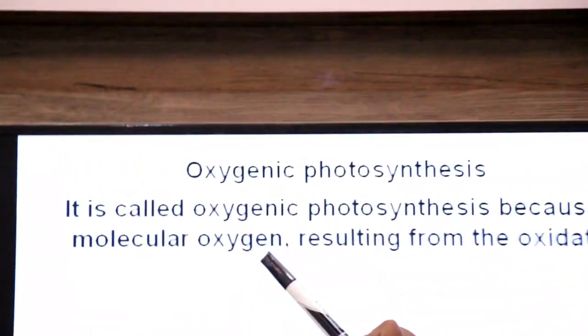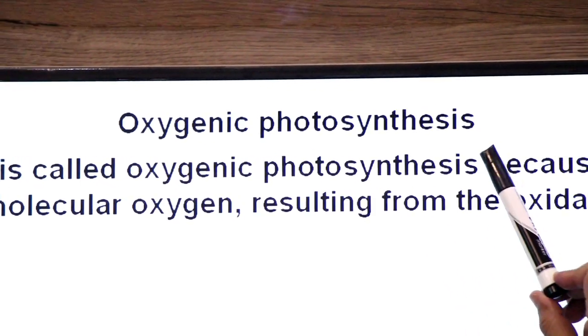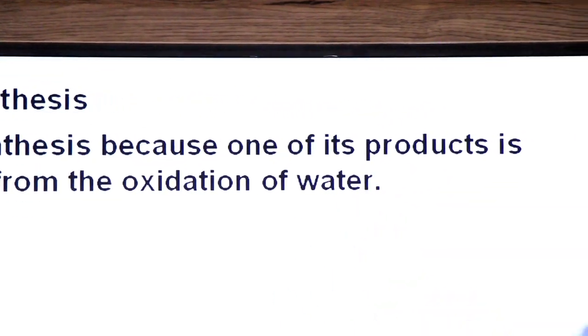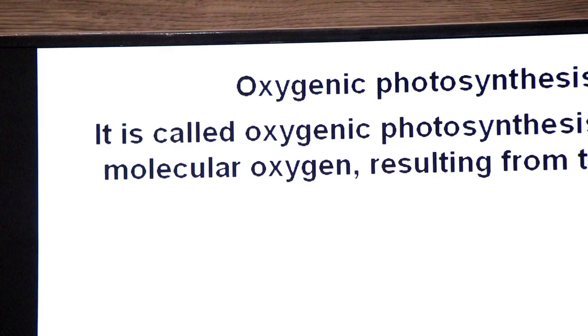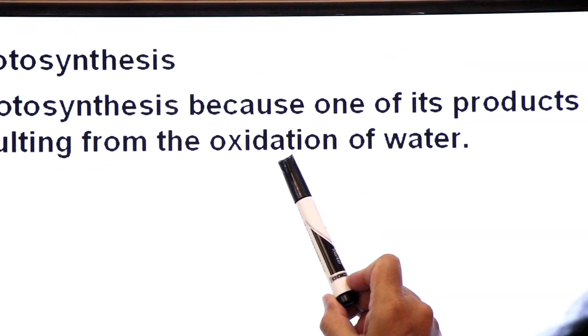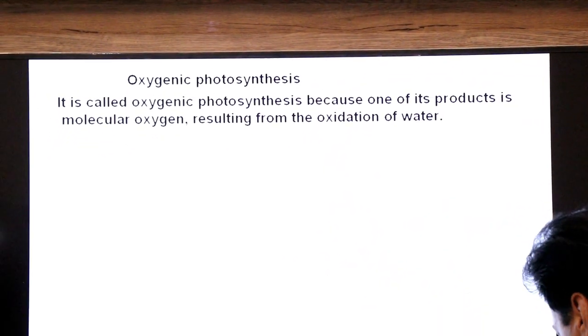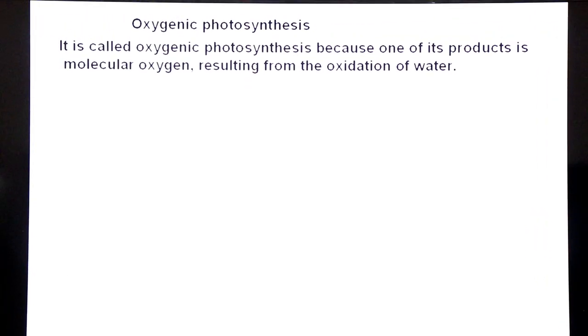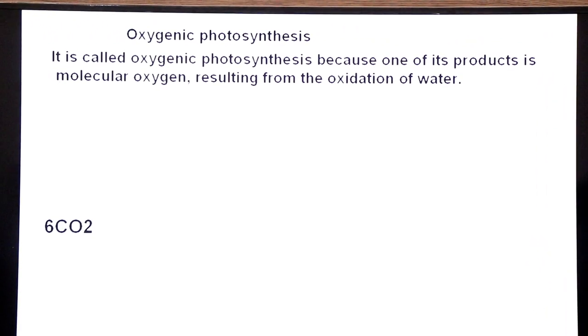Now we will study two types of photosynthesis. In one type, oxygen is produced — this is called oxygenic photosynthesis. In the other type, oxygen is not produced — this is called anoxygenic photosynthesis. Let's start with oxygenic photosynthesis.